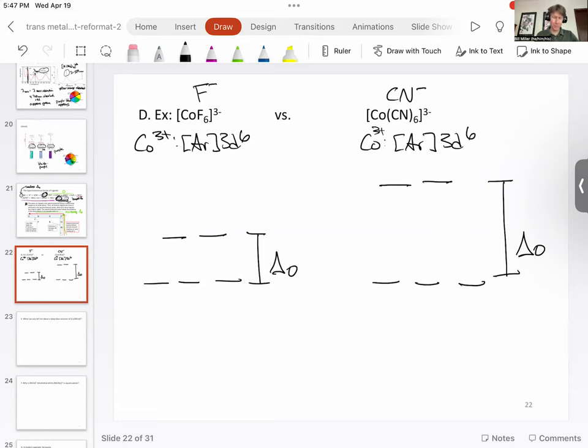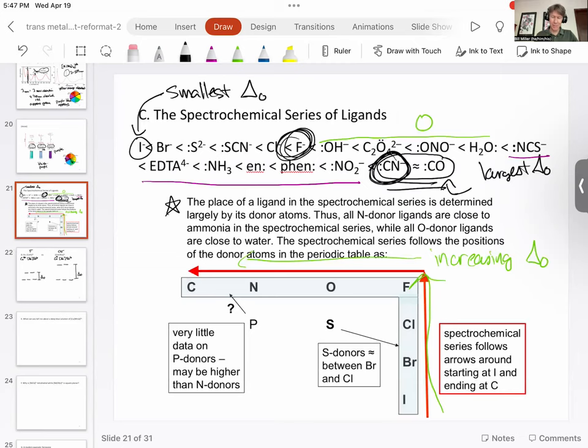That's what the spectrochemical series tells us. Cyanide has the largest crystal field splitting energy, fluoride is amongst the smallest, although not the smallest.